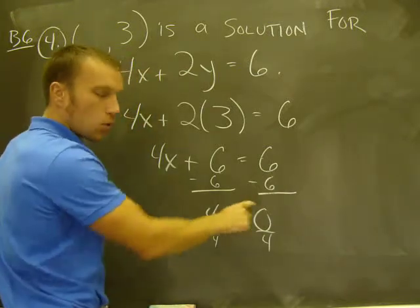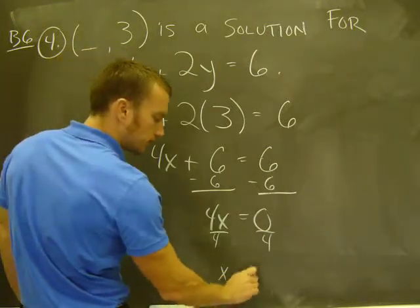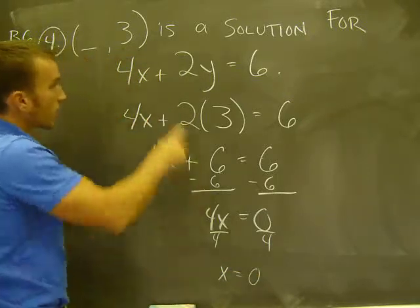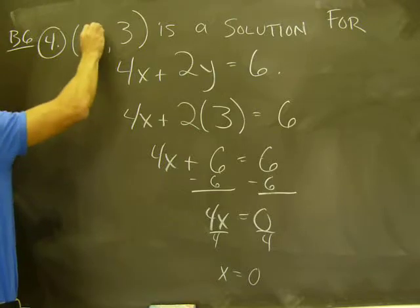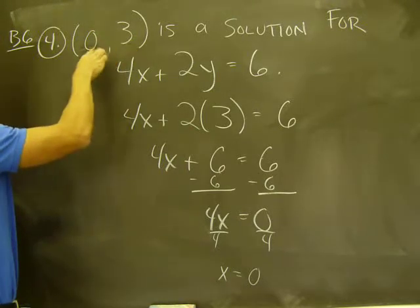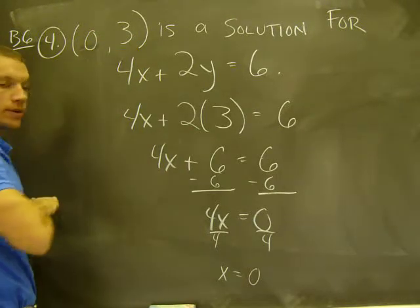Divide both sides by 4, and I have my answer, x equals 0. Come back up here and fill in the blank. So the point with the y value of 3 has an x value of 0, 0 comma 3.